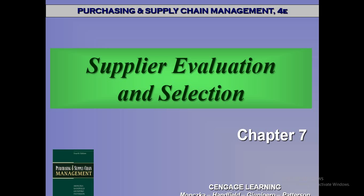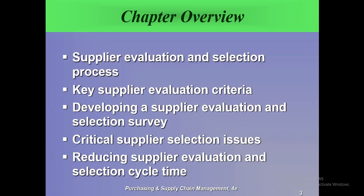In this lecture, we will move on to Chapter 7, Supplier Evaluation and Selection. In this chapter, we will talk about the Supplier Evaluation and Selection process, the key supplier evaluation criteria, how to develop a Supplier Evaluation and Selection survey, critical supplier selection issues, and reducing Supplier Evaluation and Selection cycle time. In this lecture, we will cover the first objective: the Supplier Evaluation and Selection process.